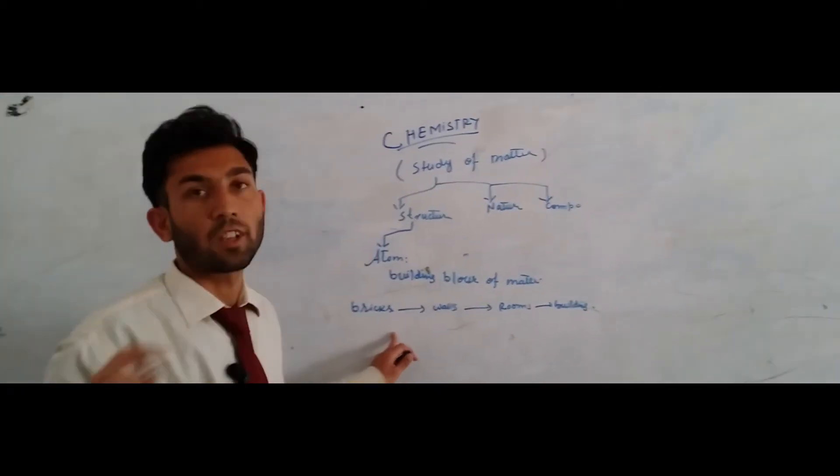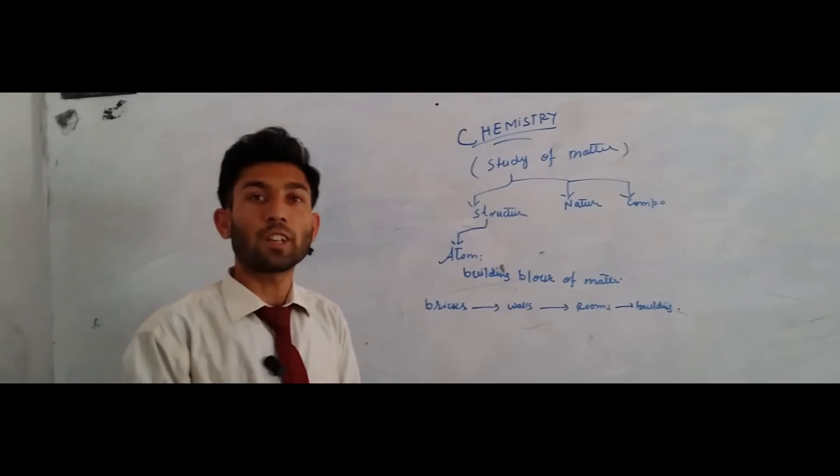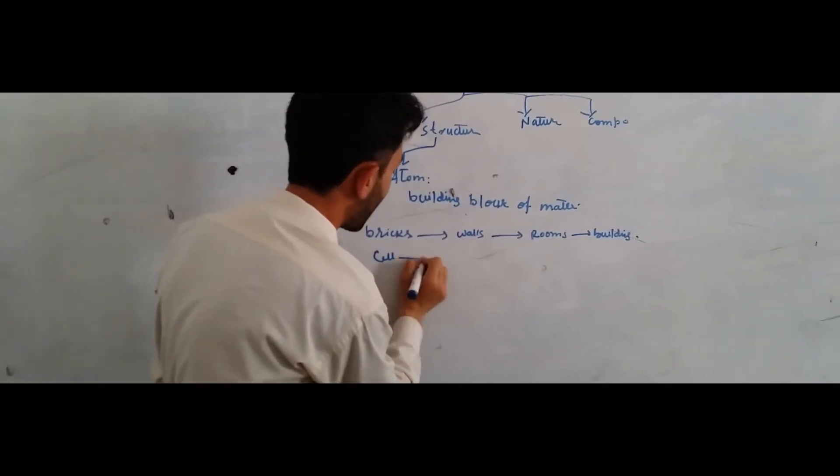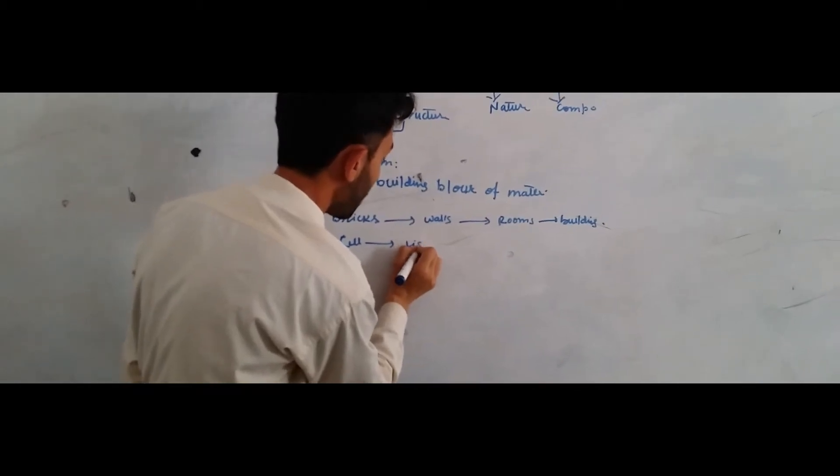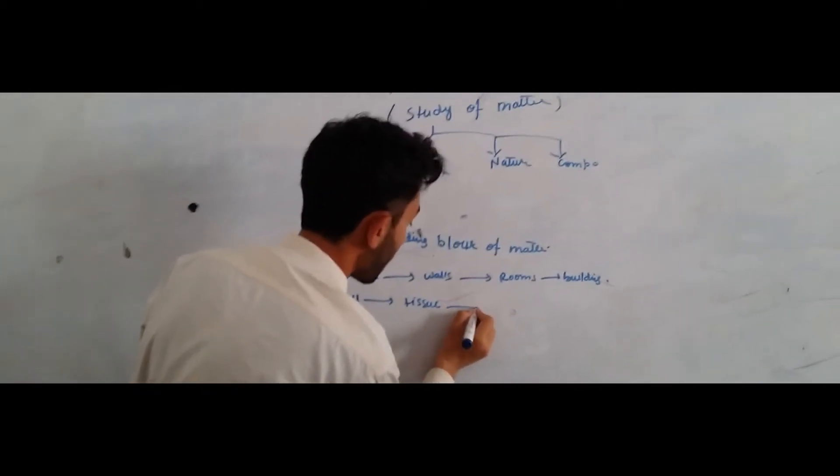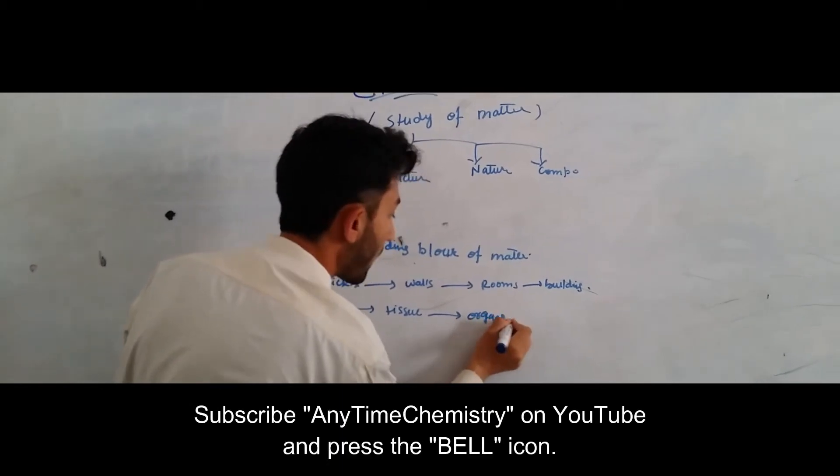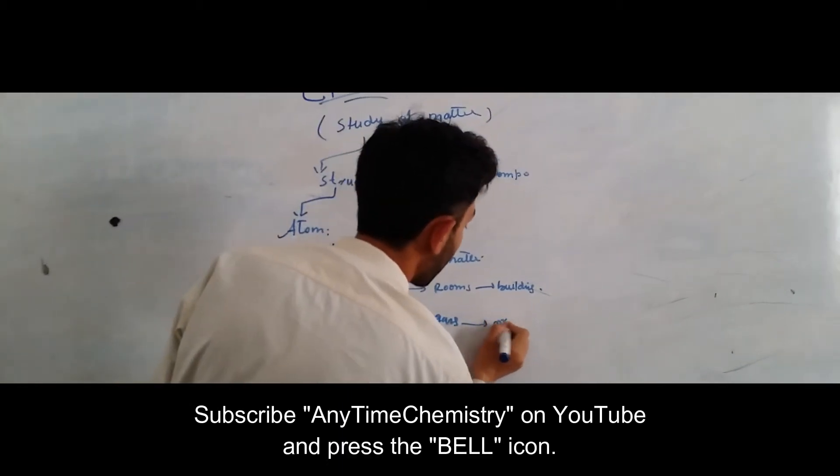We can also take a scientific example like cell. By joining the cells we get tissue, tissues make organs, and organs make organism.